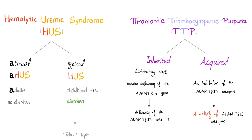Hemolytic uremic syndrome is divided into atypical HUS and typical HUS. Today we are talking about typical HUS, which occurs in childhood and presents with bloody diarrhea. Thrombotic thrombocytopenic purpura has an inherited type and an acquired type. The inherited form is extremely rare — it is a genetic deficiency of the ADAMTS13 gene, leading to deficiency of the ADAMTS13 enzyme.